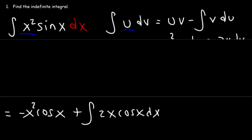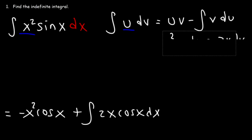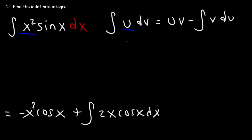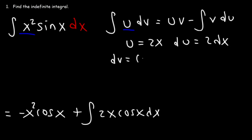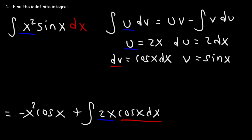We need to perform integration by parts one more time. Let u equal 2x, so du is 2 dx. And dv equals cosine x dx, which means v, the antiderivative of cosine, is sine x, because the derivative of sine is cosine.